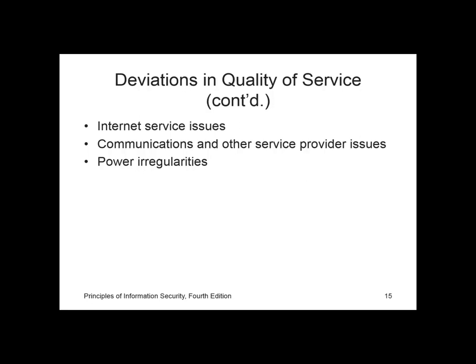The third service issue is power irregularities. The threat of irregular power from the utility company is common and can lead to fluctuations such as power excess, power shortage, and power losses. In the United States, buildings are fed with 120 volts, 60 hertz cycle power, usually through 15 and 20 amp circuits. The voltage level can spike momentarily, increase or surge with prolonged increase, sag momentarily as low voltage, experience a brownout as a prolonged drop, or fault as a momentary loss of power, or blackout as a prolonged loss.